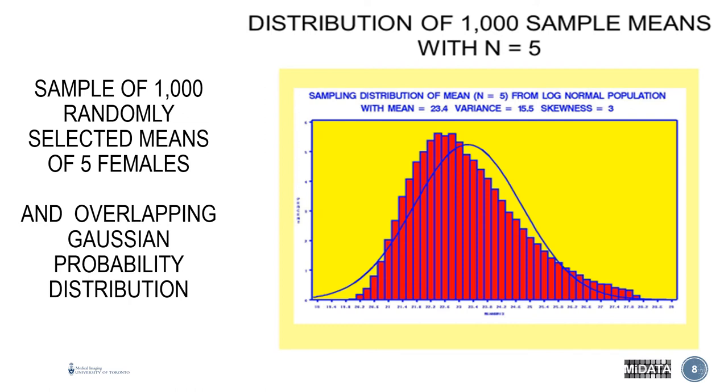If you look at the header of this histogram it's saying sampling distribution of the mean n equals five from a log normal population and that population has a mean of 23.4 and a variance of 15.5 and a skewedness of three and this is the same as the previous histogram. So what we're showing you here is not individual BMIs but actual mean BMIs of sample size five.